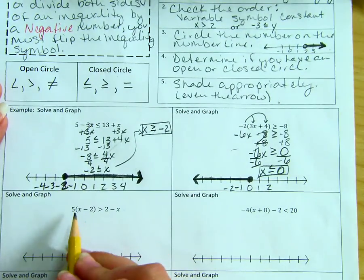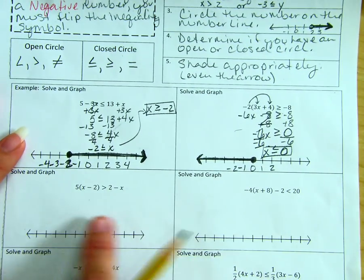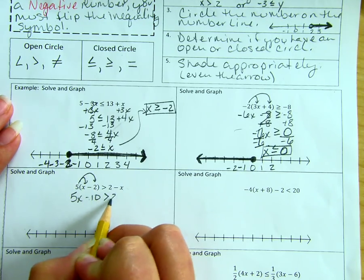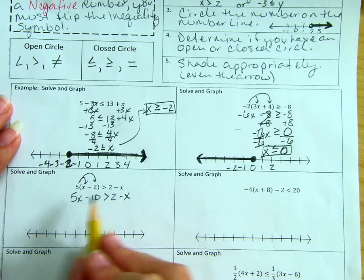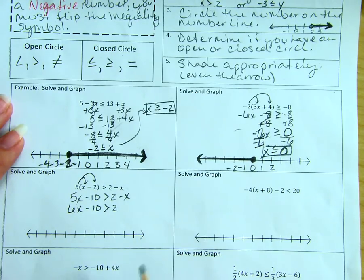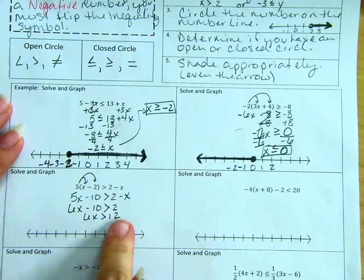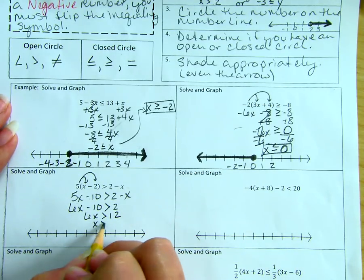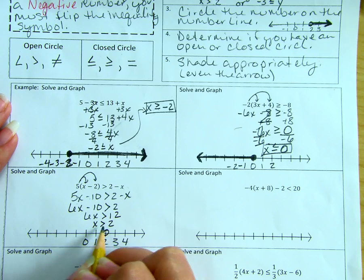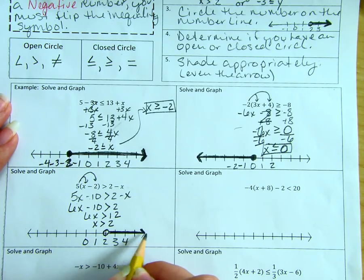The next problem is five times the quantity x minus two is greater than two minus x. Distributing gives five x minus ten is greater than two minus x. Moving the negative x to the left by adding gives six x minus ten is greater than two. Adding ten to both sides gives six x is greater than twelve. Dividing both sides by six gives x is greater than two — open circle, shading to the right.